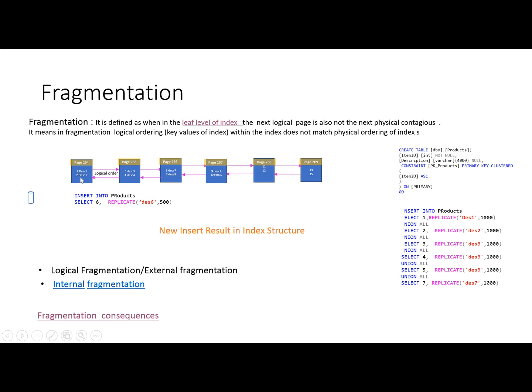This leaf level is where the data will be stored for the clustered index, and the data is arranged as per the item ID. When we inserted the first record it's taking this first page, and then the second record is also coming on this page because there is still space to accommodate this record. Records 3 and 4 are on the next page, and 5 and 7 on the next contiguous pages. So all the data is in order and the physical order and logical order are the same.